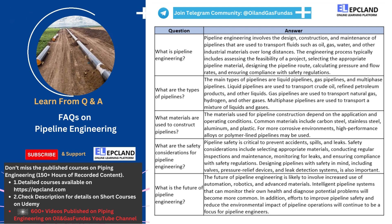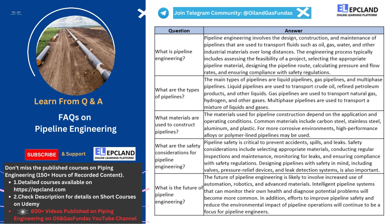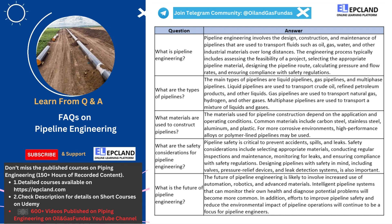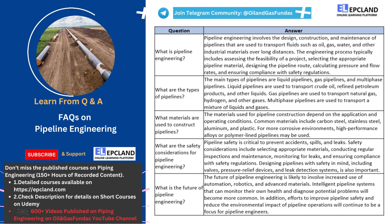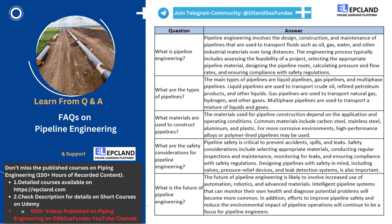The third question is: What materials are used to construct pipelines? Pipeline construction requires careful consideration of the materials used to ensure that the pipeline can withstand the operating conditions and transport fluids safely and efficiently. The materials used can vary depending on the application and operating conditions. The most common materials are carbon steel, stainless steel, aluminum, and plastic.